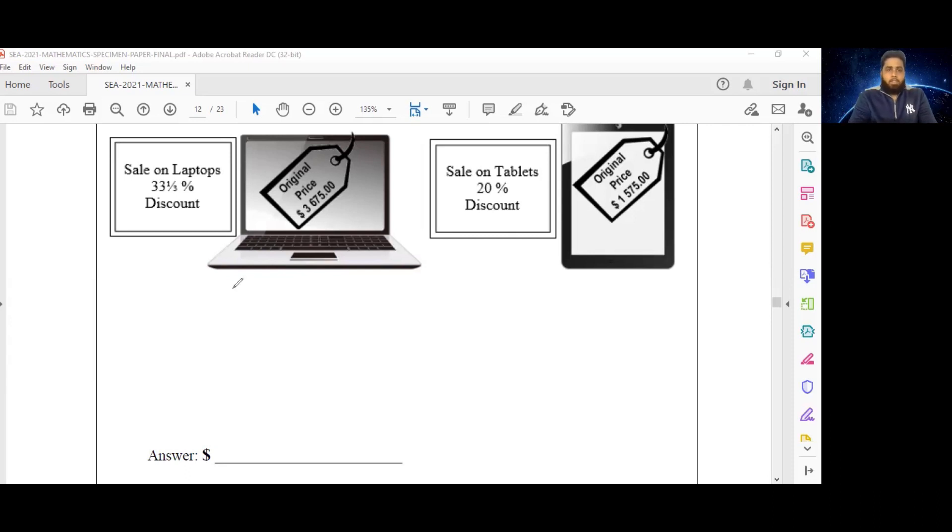But just in case you didn't know, I will run it through with you briefly. So 33⅓% is 33⅓ divided by 100.